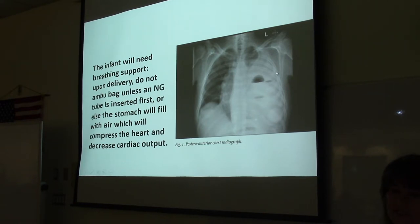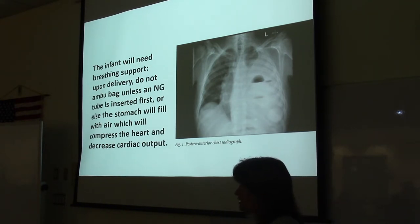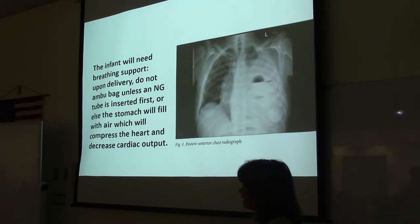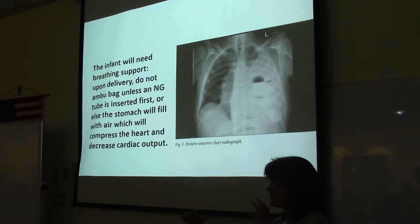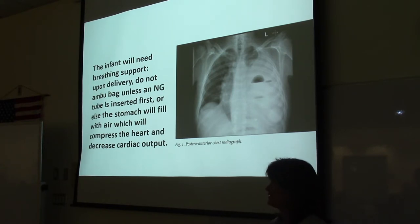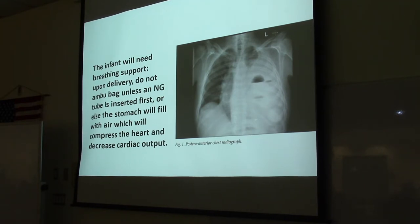The other issue is that once they're born and showing distress, if you start bagging with positive pressure, some air goes down the esophagus and into the stomach. As you're bagging an infant with congenital diaphragmatic hernia, air fills up the intestines. The more air in the intestines, the more pressure exerted in the thorax — it starts squeezing the heart, the heart can't pump, and they'll have a cardiac arrest. So if you can catch this before birth: don't bag until an NG tube is placed, connected to suction, and then you can start assisting their breathing.